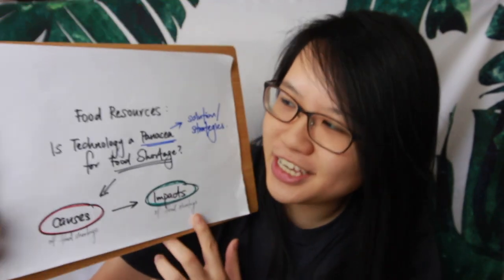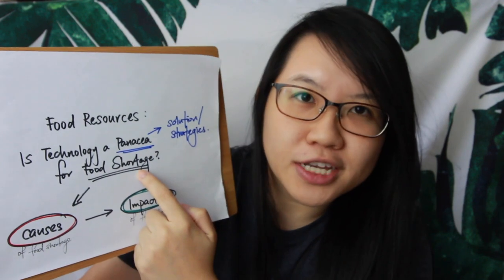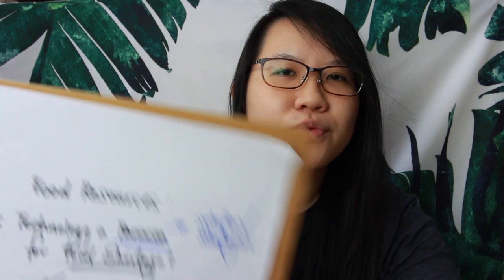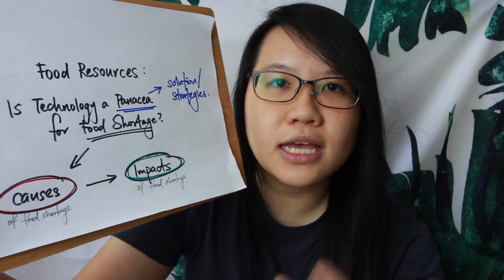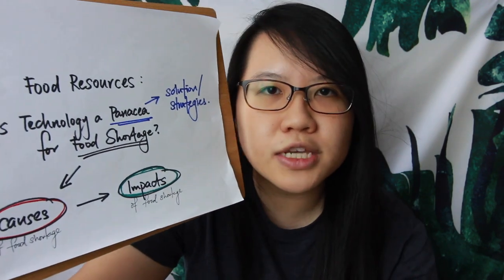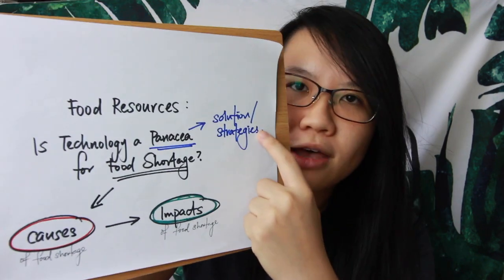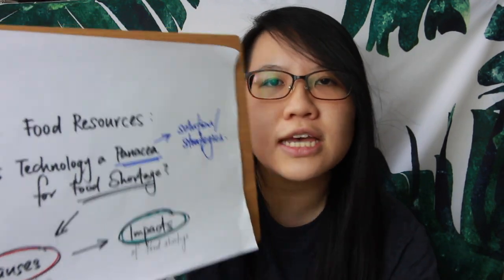In this chapter on food resources, the overarching question is: is technology a panacea for food shortage? To unpack this question, we first need to ask what causes food shortage — is it simply more demand than supply, or are there other underlying problems? We'll unpack the causes, then the impacts and consequences, and finally the proposed solutions countries can adopt.